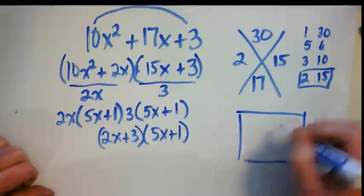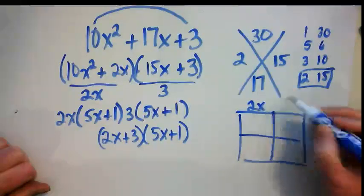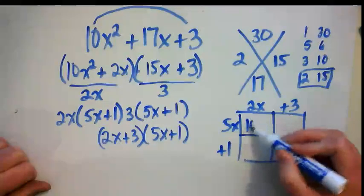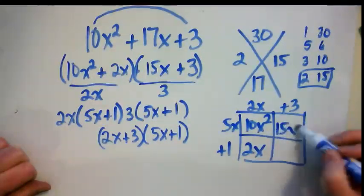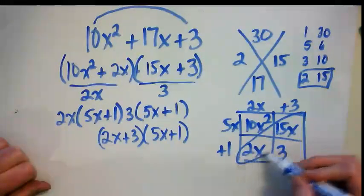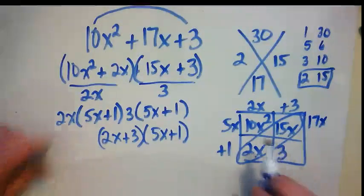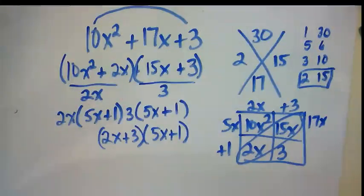Now we can check our work going back to everything we've been learning over the last few weeks. When I combine these like terms, do I get 17? I do. And so I see my 10x squared, my 17x, and my 3. So it checks.